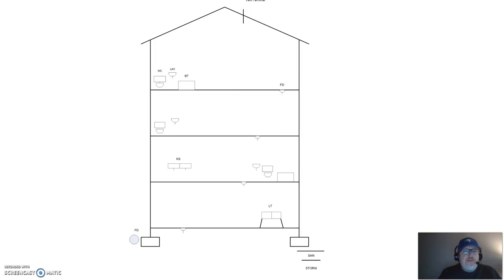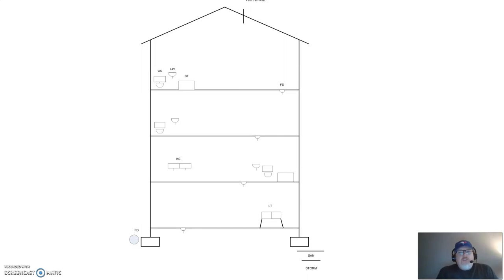On the left hand side of the building we have 'FD' in a circle to represent our foundation drain, which wraps totally around the whole building. That's where we'll connect our foundation drain into our storm system. On the right hand side you'll notice two lines — the top one is sanitary and the bottom one is storm — so we have a separate system here, and we're going to start to draw it in.